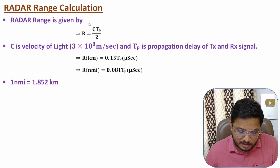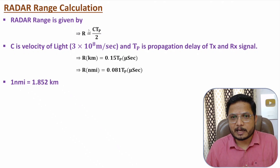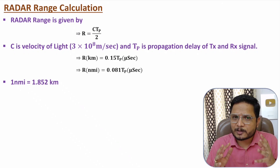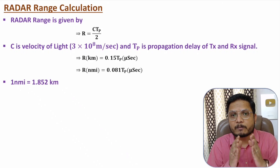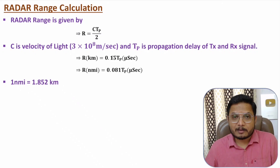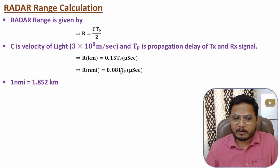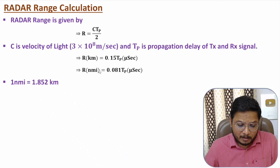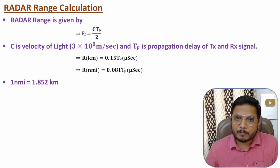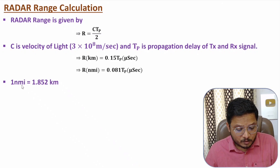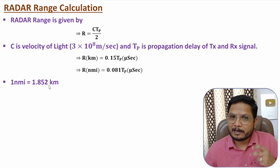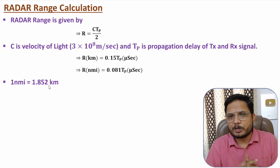Dividing 0.15 by 1.852 gives 0.081, so these two equations may appear in calculations. Sometimes propagation delay is given in microseconds and you need range in kilometers — use R = 0.15 × tp. If range in nautical miles is needed, use R = 0.081 × tp. If you don't remember the nautical mile formula, calculate range in meters, divide by 1000 for kilometers, then divide by 1.852 for nautical miles.